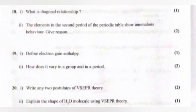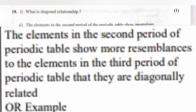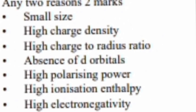Question 18: 1. What is diagonal relationship? 2. The elements in the second period of the periodic table shows anomalous behavior. Give reason. Answer: 1. The element in the second period of periodic table shows more resemblance to the element in the third period of periodic table that they are diagonally related. 2. Small size, high charge density, high charge to radius ratio, absence of d orbitals, high polarizing power, high ionization enthalpy, high electronegativity. Write any two reasons.